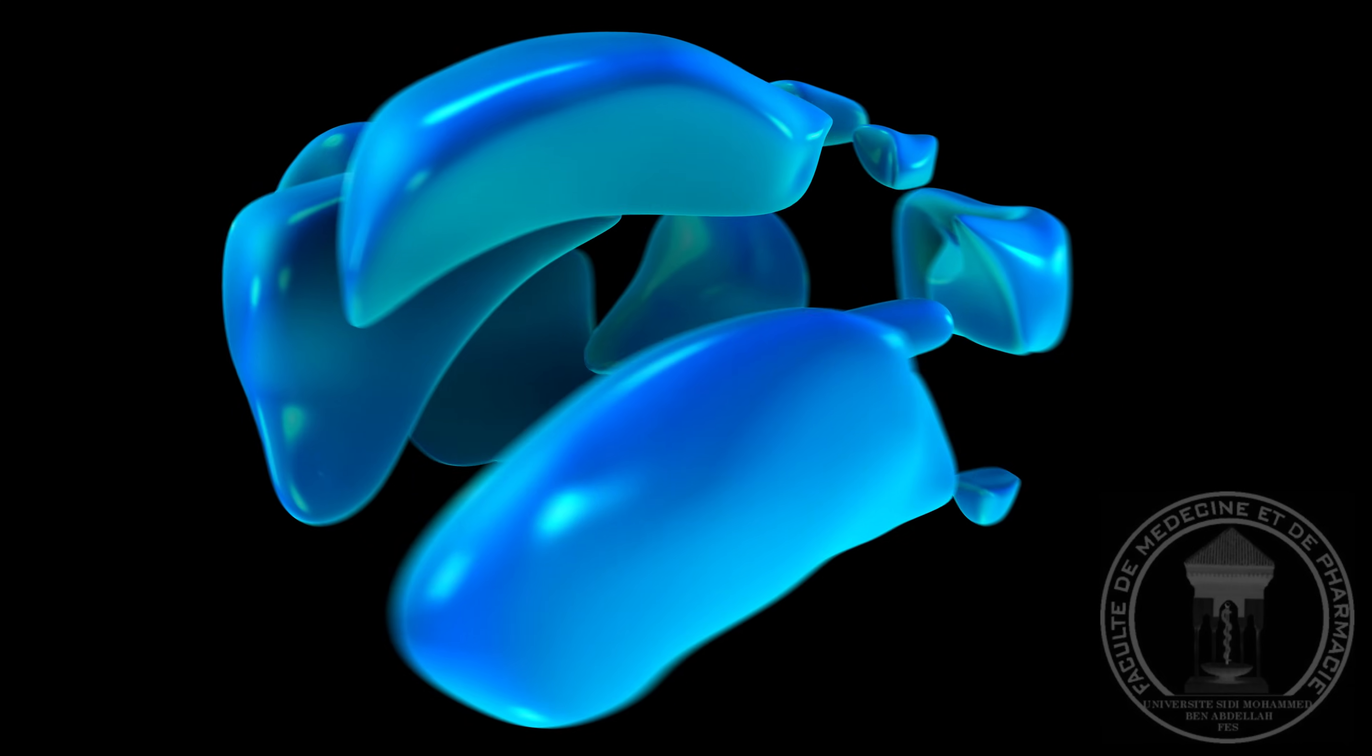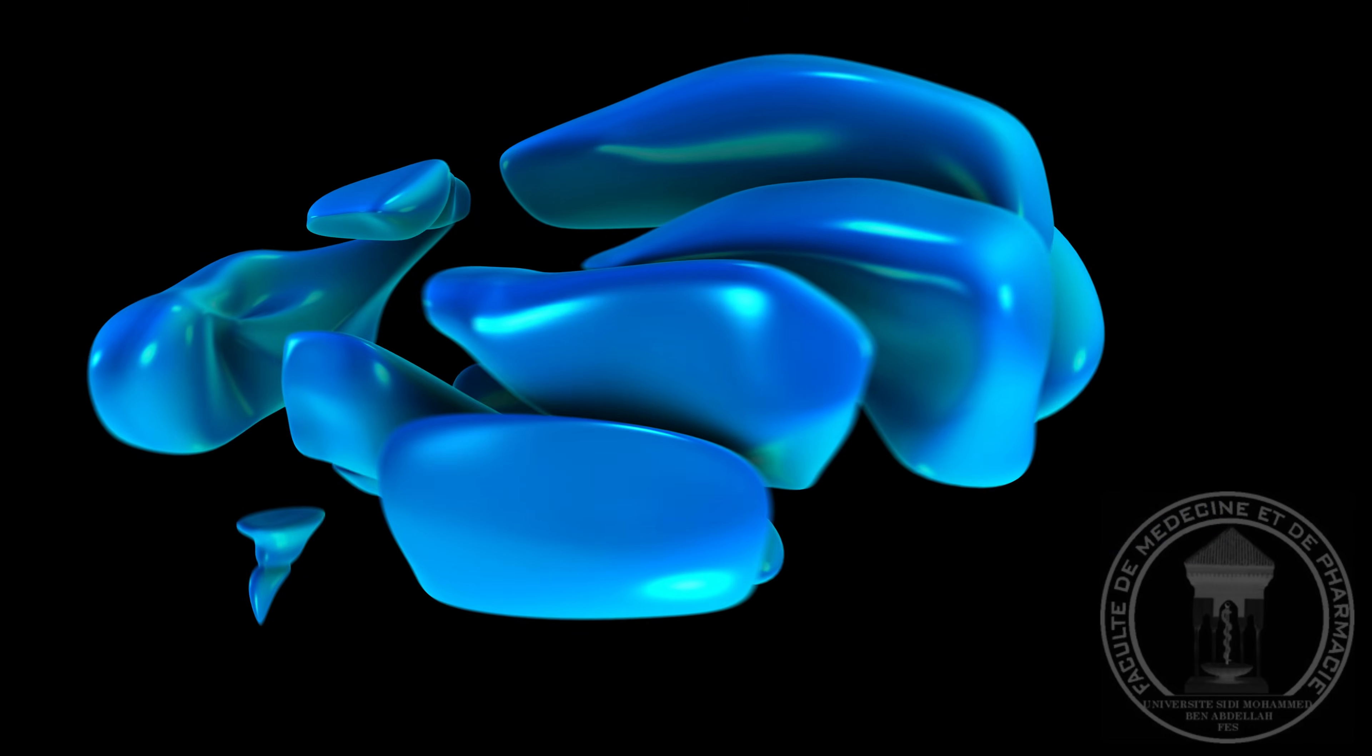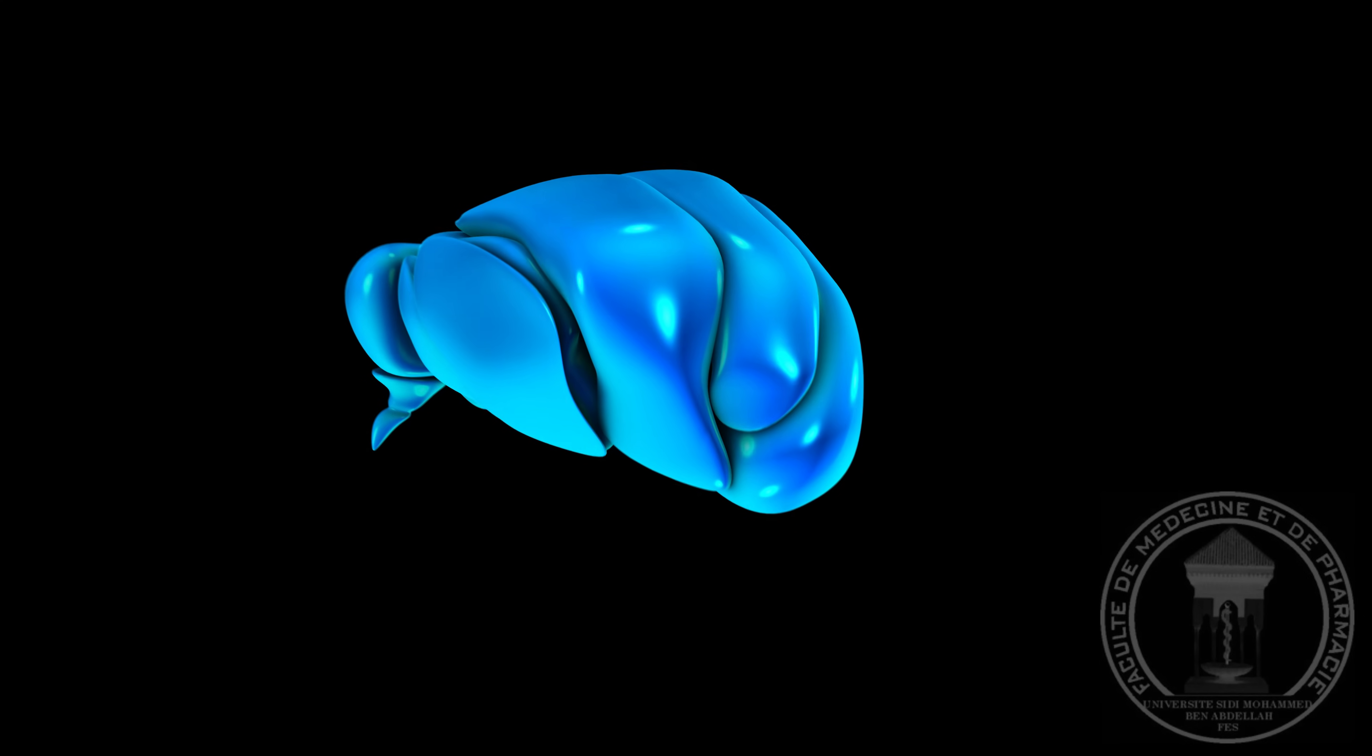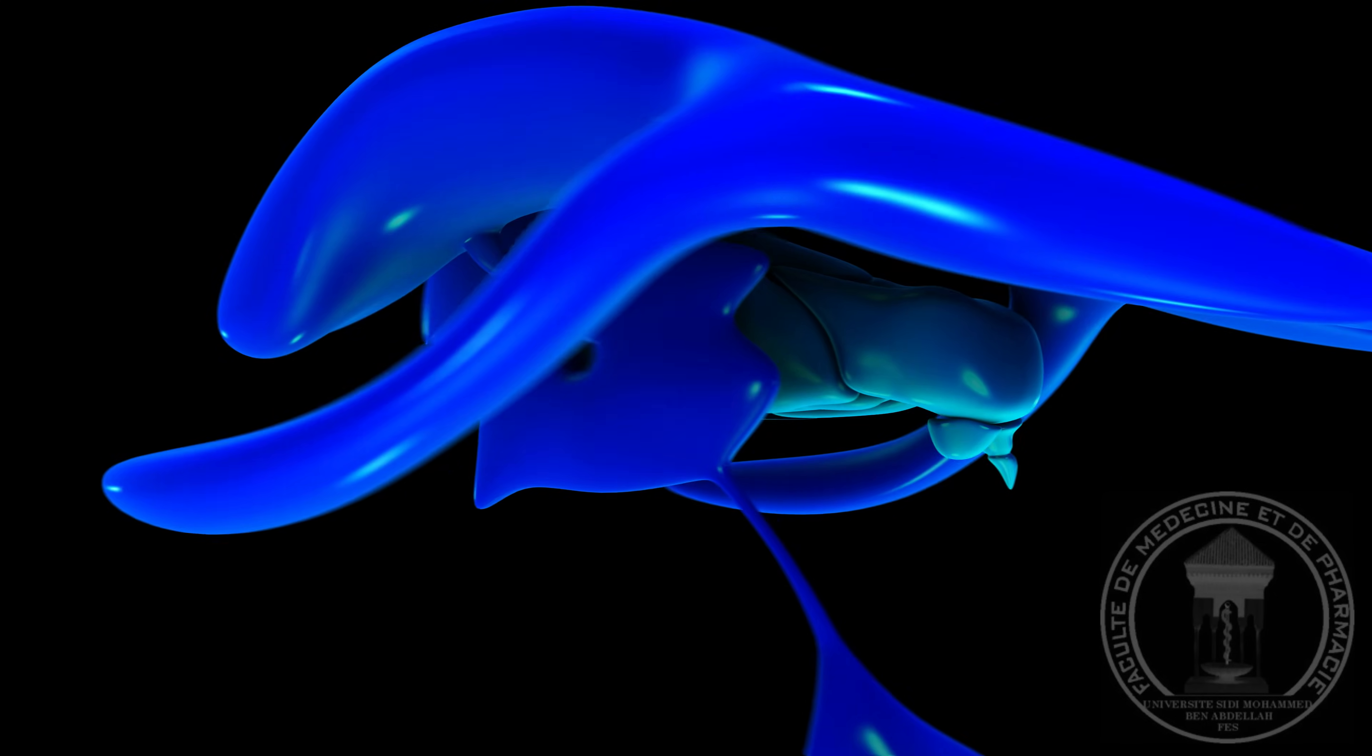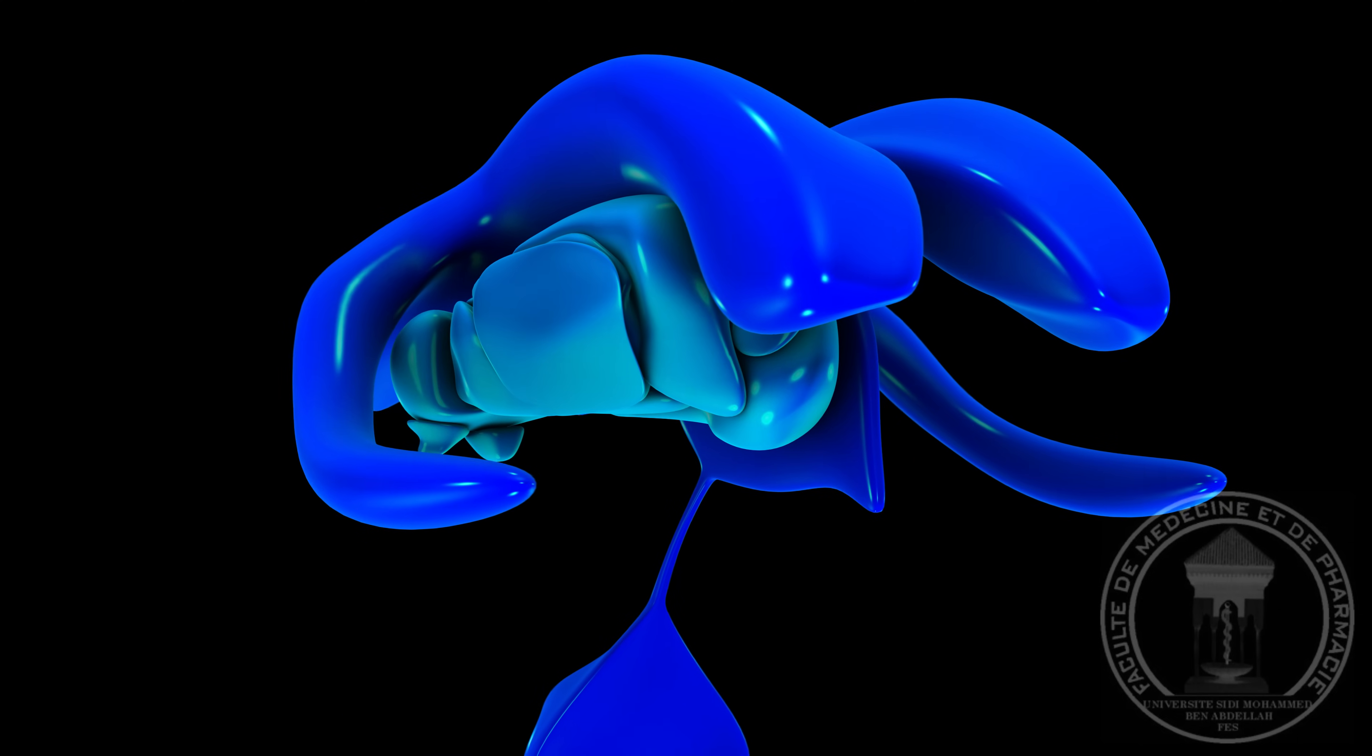The thalamus consists of multiple nuclei. Each of these nuclei plays a very important role. The thalamus marks the lateral side of the third ventricle and is surrounded on top and front by the body and head of the two lateral ventricles.